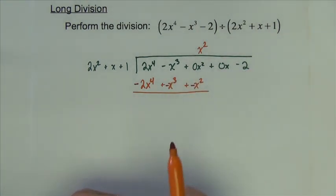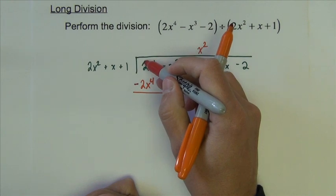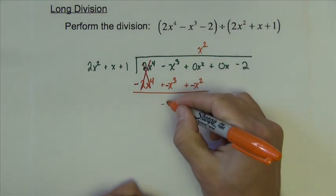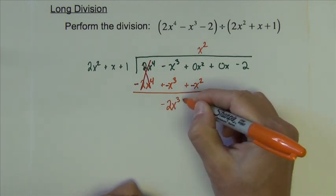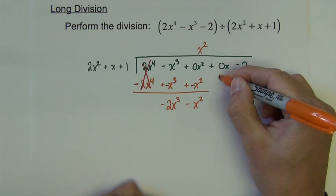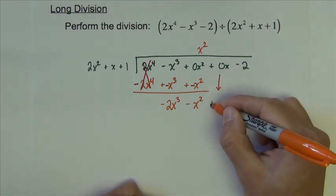So what happens is this cancels out. I combine like terms everywhere else. I get negative 2x to the third minus x squared. And we bring down the next term.